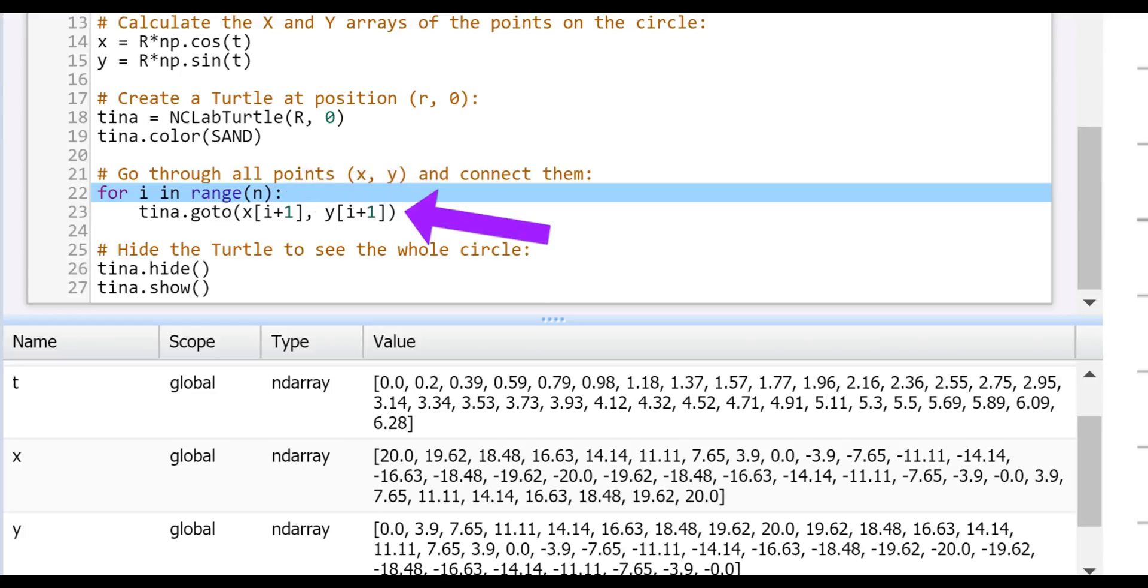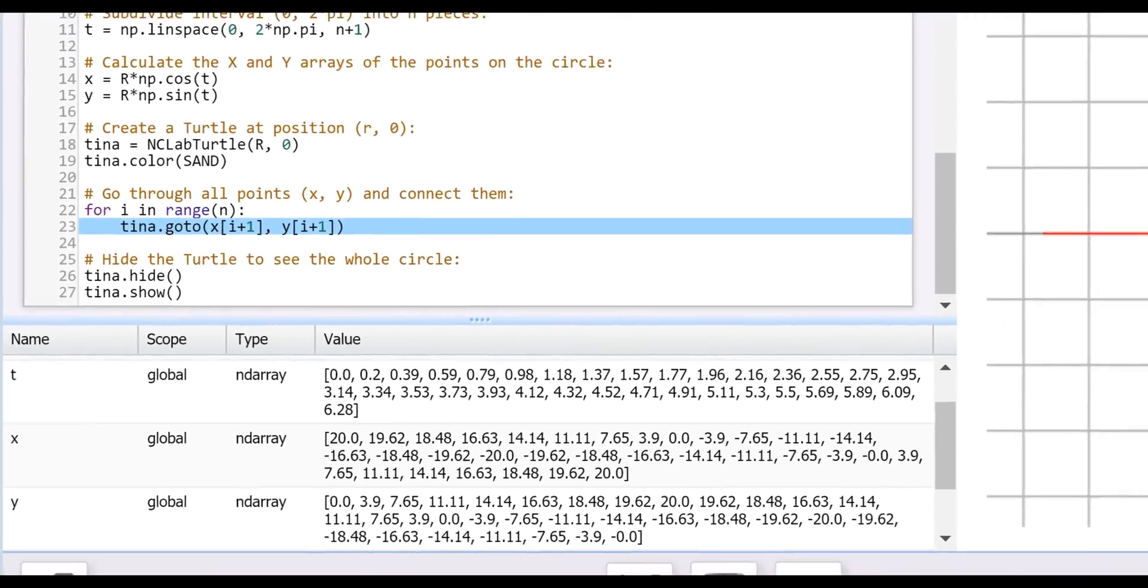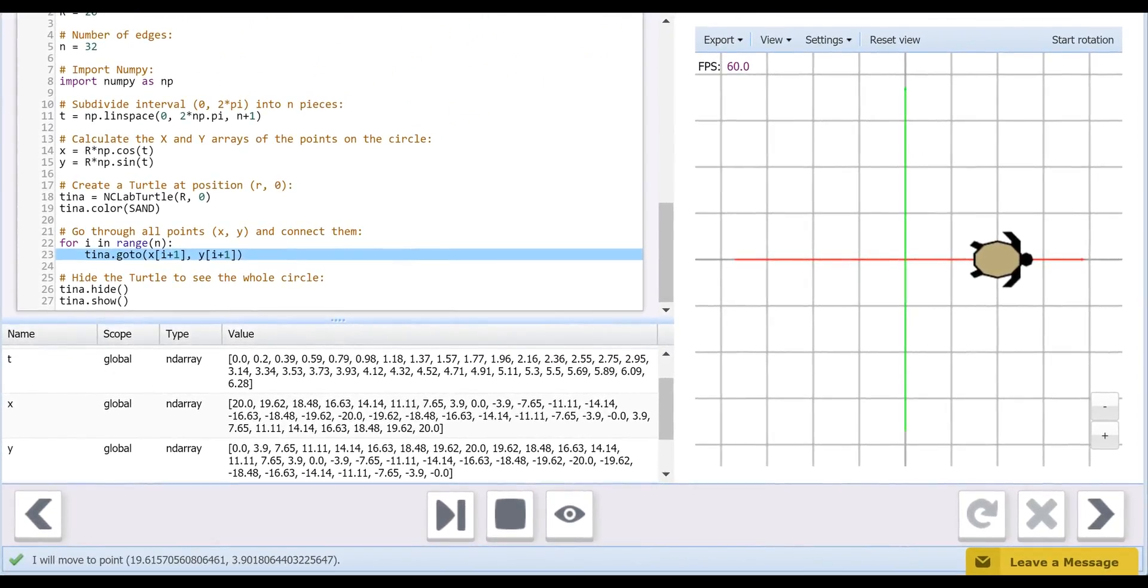We define the range as our interval parameter in the for statement on line 22. The body of the loop on line 23 uses the go to command to draw a line to the next set of values in each list, increasing the index by one each time. I will quickly click through the 32 iterations of the loop.